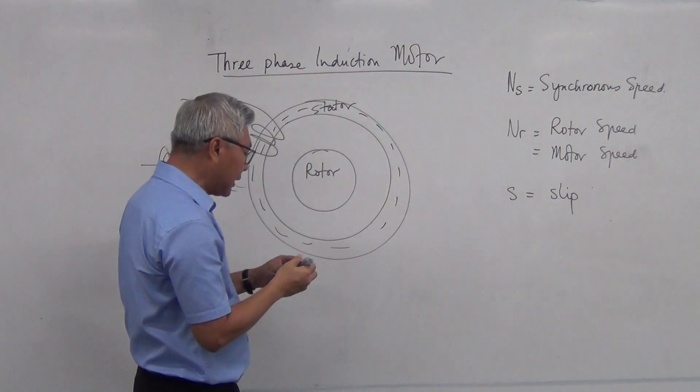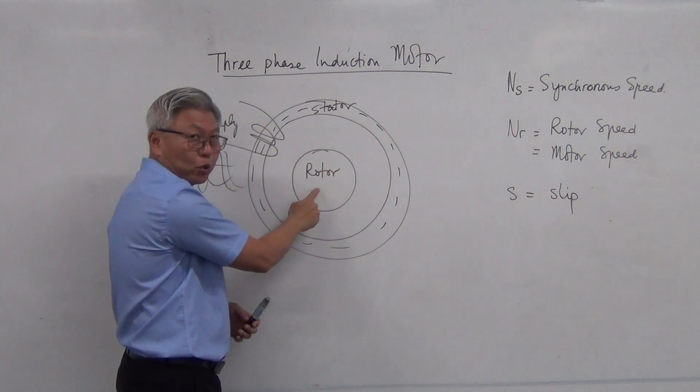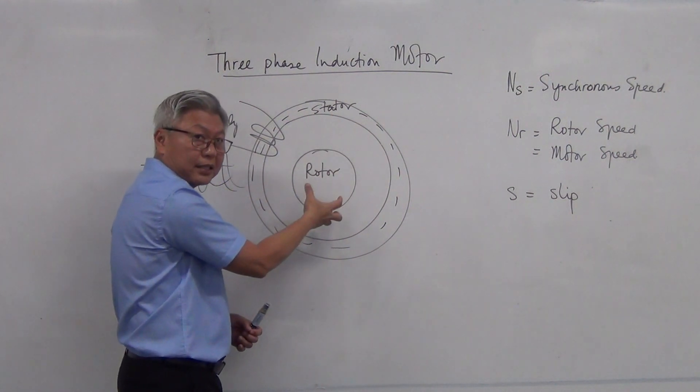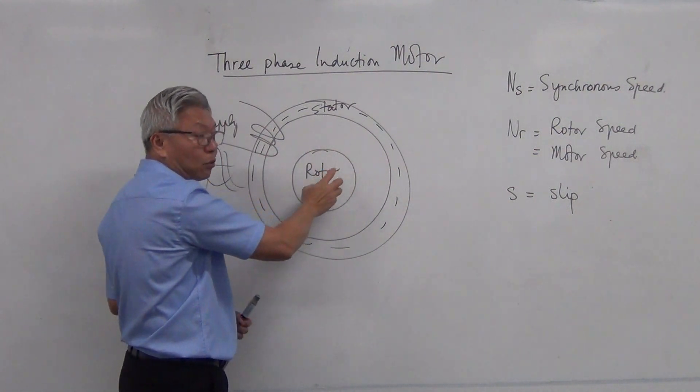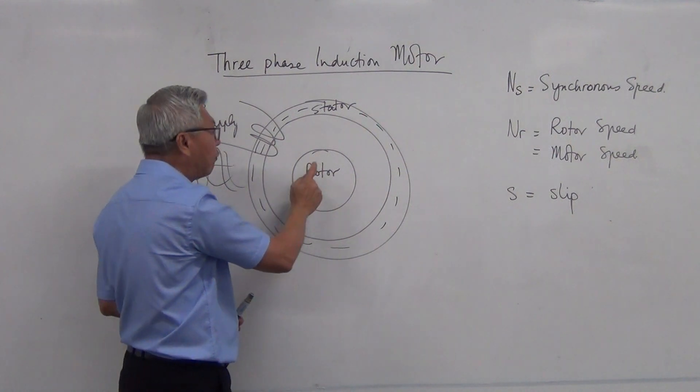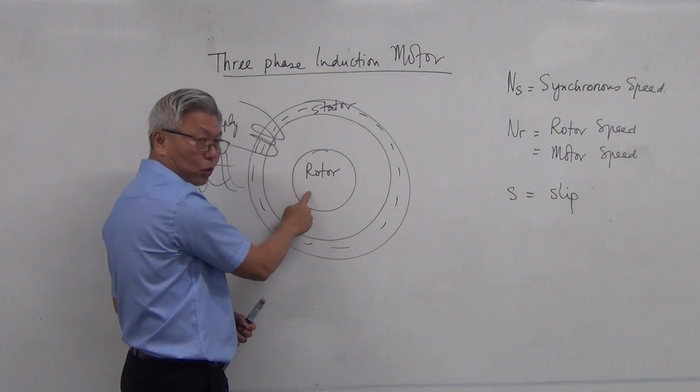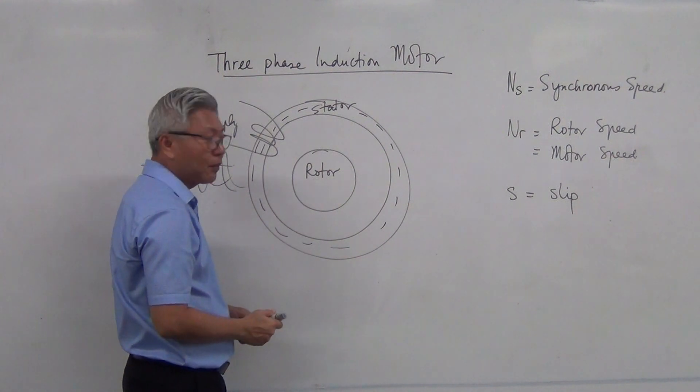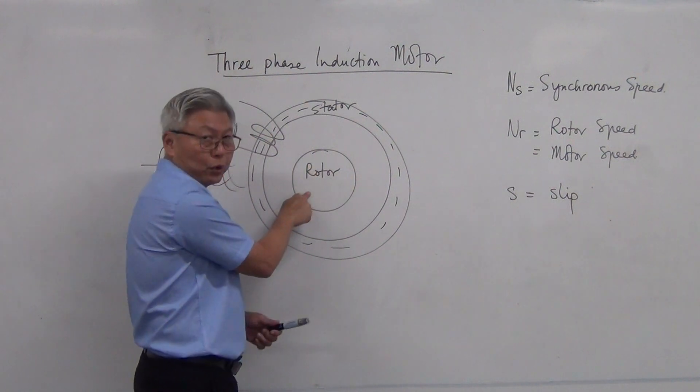Now, this pulsating magnetic flux will react in our rotor. Rotor is a bundle of conductors. And this pulsating magnetic flux, moving magnetic flux, cutting the rotor or the conductor. And therefore, a voltage is induced in the rotor. And when voltage is induced in the rotor, there is a current flowing in the rotor.